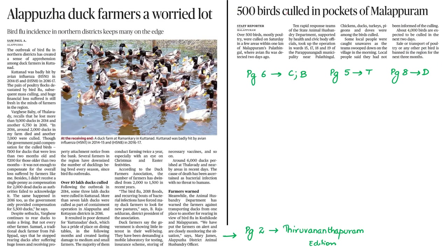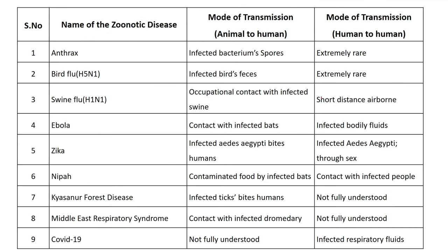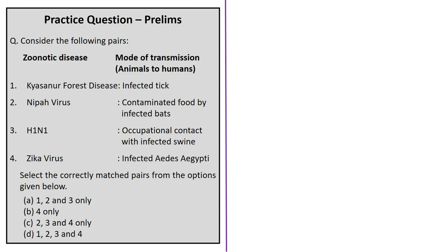Kerala can be seen as a hotbed of zoonotic diseases. A table of zoonotic diseases has been provided showing their mode of transmission from animals to humans, and whether there is human-to-human transmission. This table is useful from a prelims exam perspective.